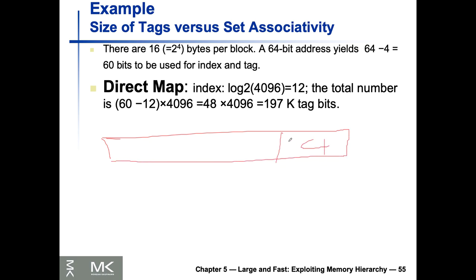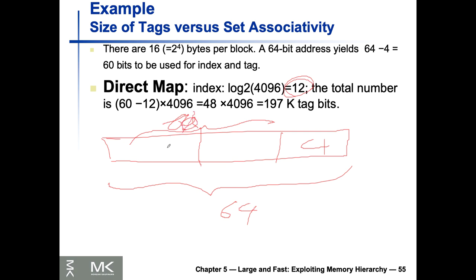We've determined four bits for the offset and 12 bits for the index. That leaves 60 minus 12 = 48 bits for the tag. Multiplied by 4096 blocks, a direct map cache requires 197K tag bits.